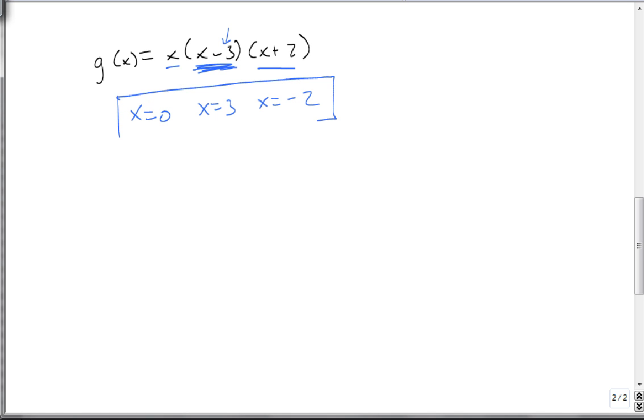So here we have 3 answers, because we have 1, 2, 3 separate x's. So that's finding the x-intercepts or finding the zeros of a polynomial function.